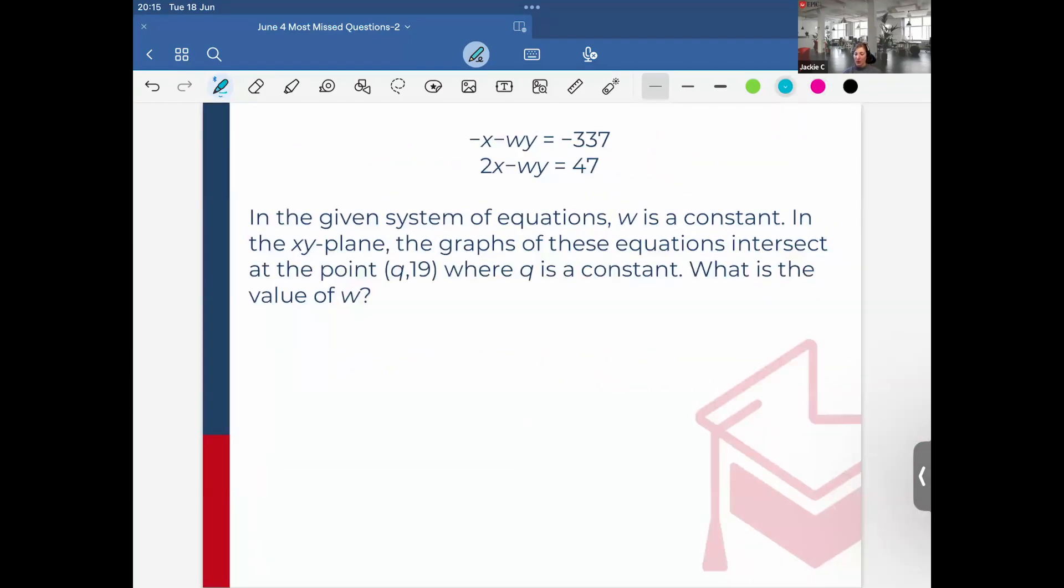Okay, so this one. We have two equations. It says in the given system of equations, w is constant. In the xy plane, the graphs of these equations intersect at (q, 19), where q is a constant. What is the value of w? Okay, so if you're given one of these on the exam with all these variables, never freak out, always remain calm. All we need to do, the point of intersection is (q, 19), we'll just substitute this in for x and this in for 19.